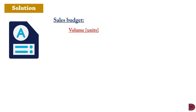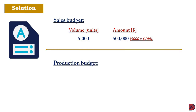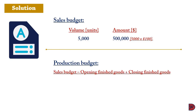Assuming sales is the principal budget factor, we start with the sales budget: 5,000 units × $100 selling price = $500,000. For the production budget, the formula is: Sales − Opening finished goods + Closing finished goods = 5,000 − 500 + 200 = 4,700 units required to be produced.